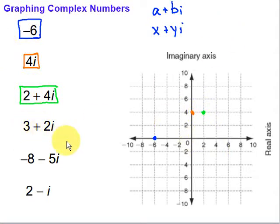How about this one? 3 plus 2I. So for that one we go over 3 on the reals and then up 2 on the imaginary puts me right there. So there we've got that one.